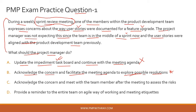Option C: acknowledge the concern and meet with the team member after the meeting to assess the risk. This is also a good option. You acknowledge the concern as a servant leader, which is good. Then you meet with the team member outside of the meeting, so you are not sacrificing the original intent of the sprint review meeting. You then assess the risk to understand what could be done differently or whether there is something substantial in the highlighted concern. This seems like the most probable option.